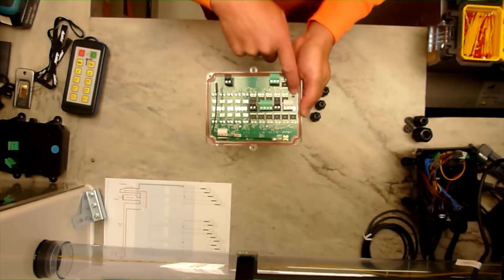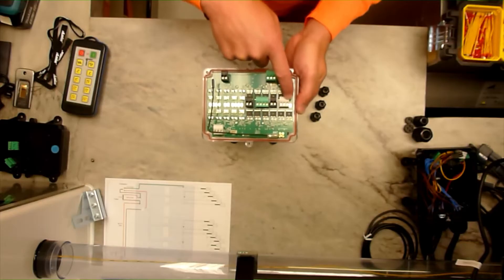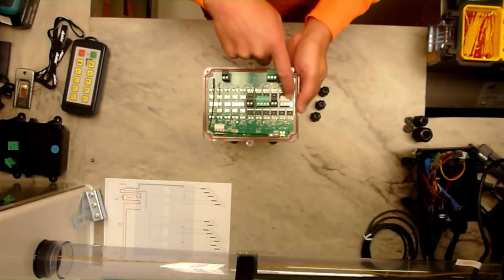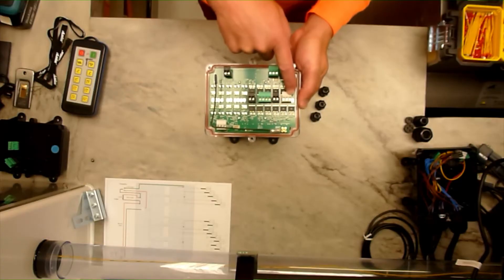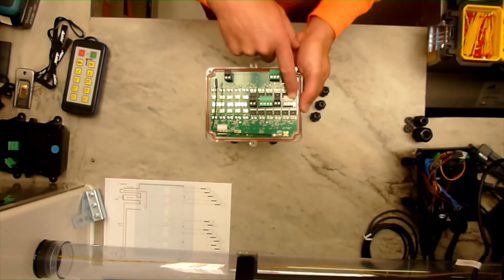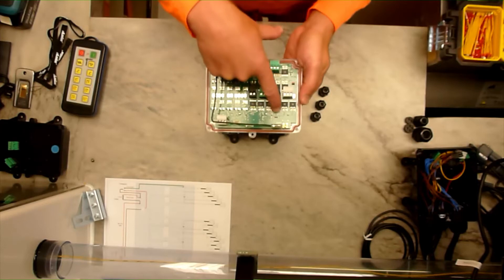This is a little jumper which determines whether this output, the M, comes on when you turn the Lodar on or only comes on when you press a button and that's solely used for dump valves and to do that you move from there to there.